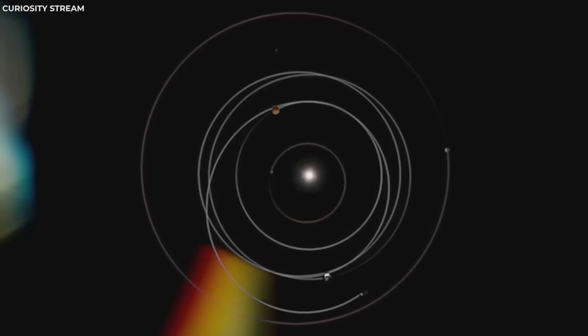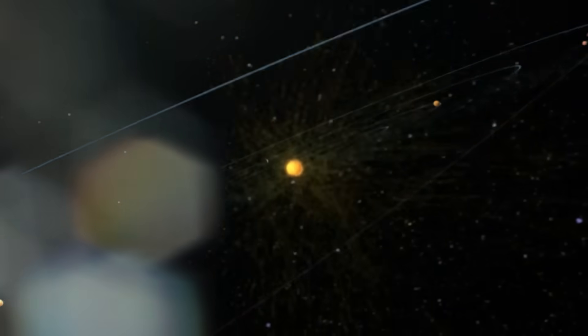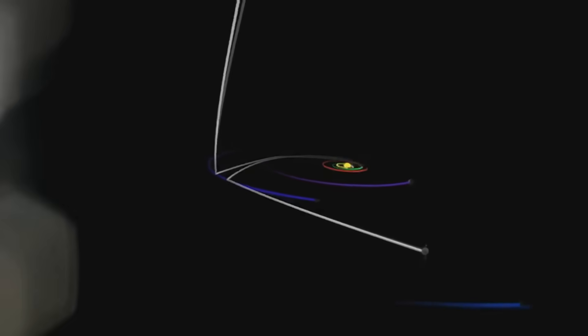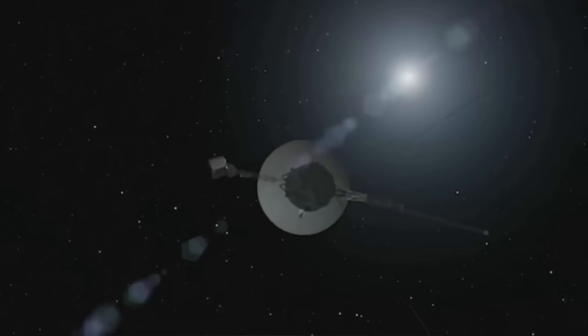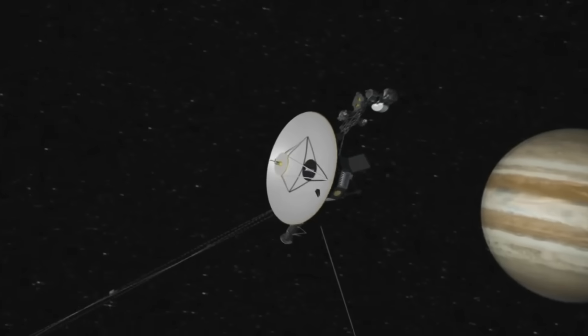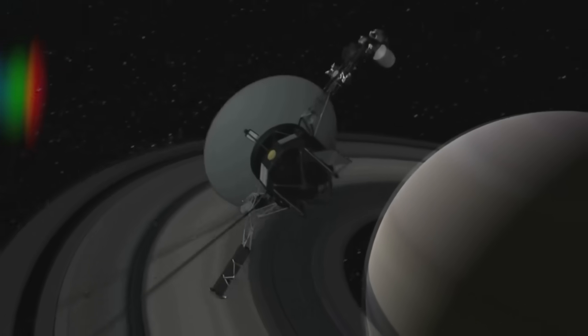During solar maximums, it expands, pushing the galactic environment away. During minimums, it contracts, exposing our system to more radiation. This dynamic behavior meant the boundary wasn't static. It was alive.